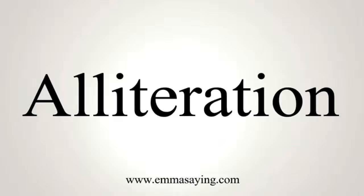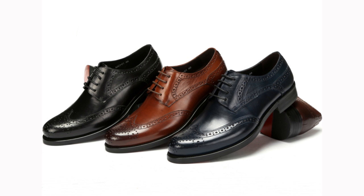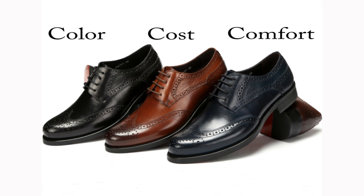Alliteration is another example of how a speaker can engage their audience by using language. Alliteration is the repetition of words with the same initial sound. For example, in a speech on dress shoes, you might encourage the audience to consider color, cost, and comfort in making their selection.